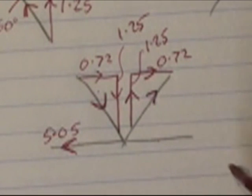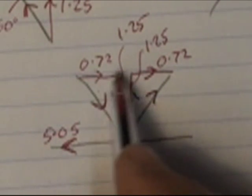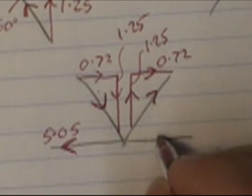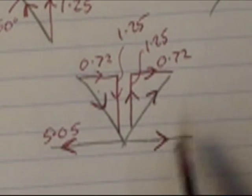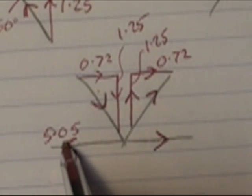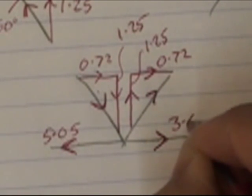So this is going that way. This one. Horizontals. I now know 1, 2, 3 out of the 4 horizontals. Therefore, this one must be going that way. And that plus that plus that must equal 5.05. So this one here must be 3.61.